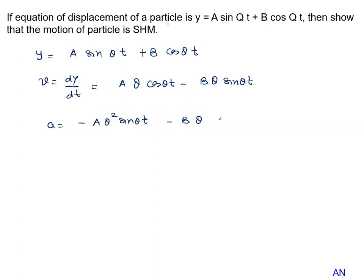Minus B Q sin Q t becomes cos Q t, Q comes out. Then acceleration is written as minus Q square, A sin Q t plus B cos Q t.